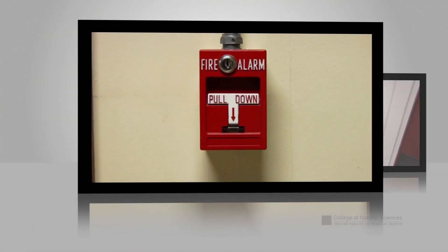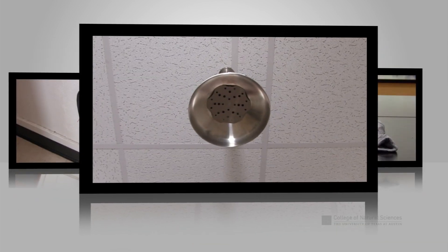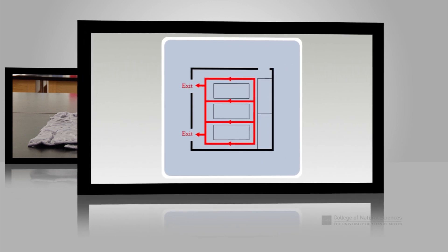In the event of a fire in the laboratory, it is important that you stay calm and act quickly. Before working in the laboratory, you should familiarize yourself with the location of the fire alarm, the fire extinguisher, the safety shower, and the fire blanket. In addition, you should always know the location of the closest exit of the room and of the building.